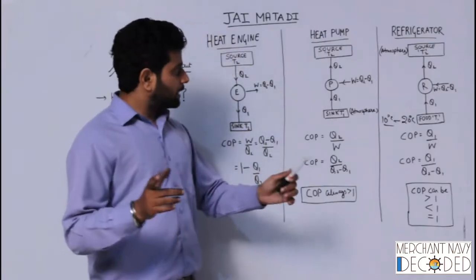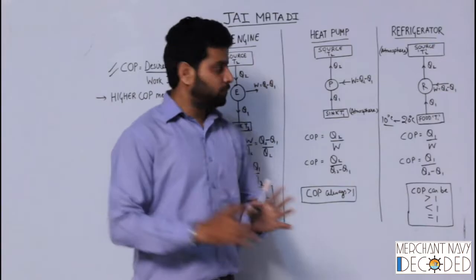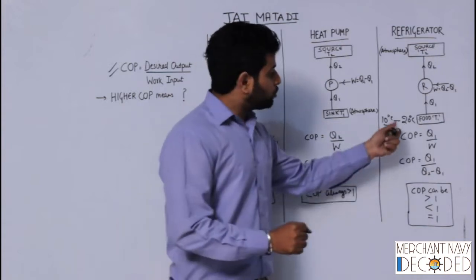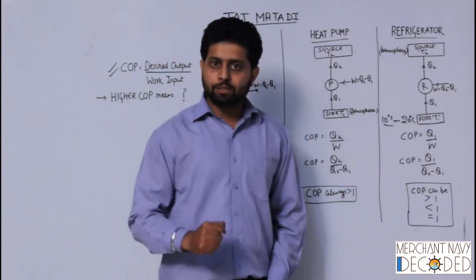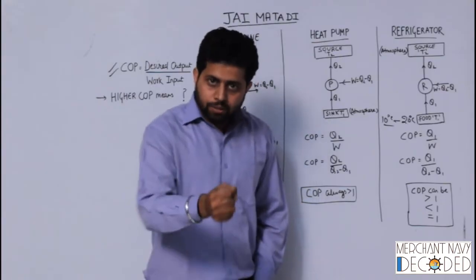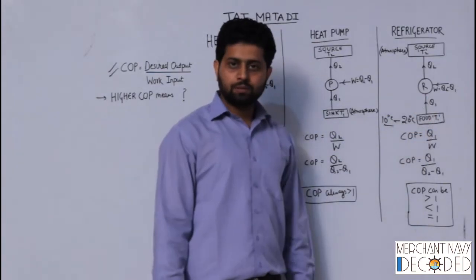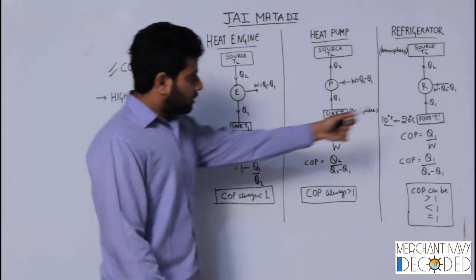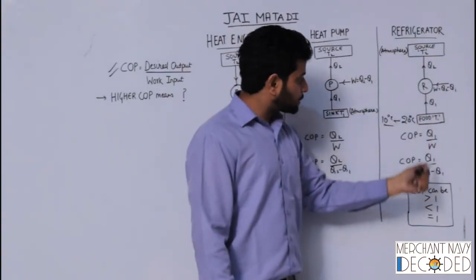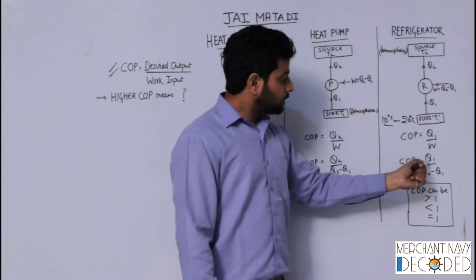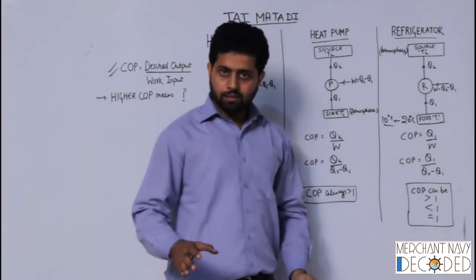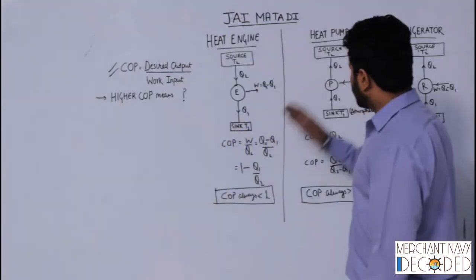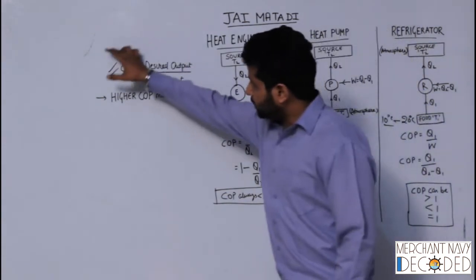Dear students, I will explain refrigerator once again because it might be a bit confusing since both heat pump and refrigerator are linked together. In the refrigerator, what I want to do is cool the food — reduce the temperature. So the desired output is to reduce the temperature, which is Q1. Work input is W, which is Q2 minus Q1. So coefficient of performance is Q1 upon (Q2 minus Q1). We have now covered coefficient of performance, heat engine, heat pump, and refrigerator.